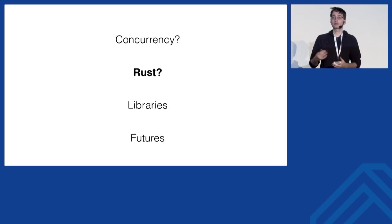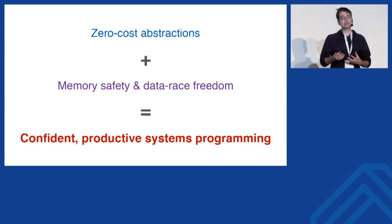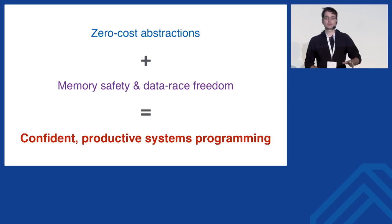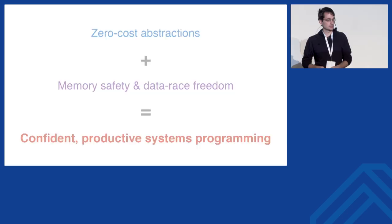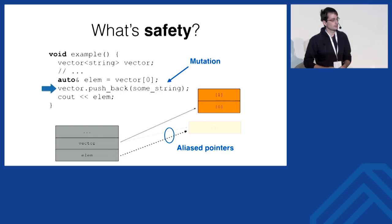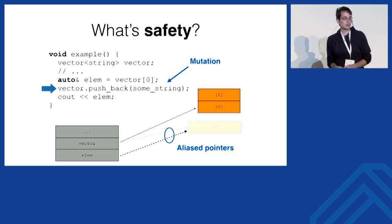Rust is made of two key ingredients: zero-cost abstractions, which you're familiar with from C++, and memory safety with data race freedom. I'll focus on how memory safety and data race freedom actually work. Here's a small example in C++ of what I mean by safety. We have a vector of strings stored directly on the stack. We get a pointer into it, then push some data onto it and try to print it out. When we push new data, the vector might need to allocate new memory, copy the existing data, update its data pointer, and free the previous chunk of memory.